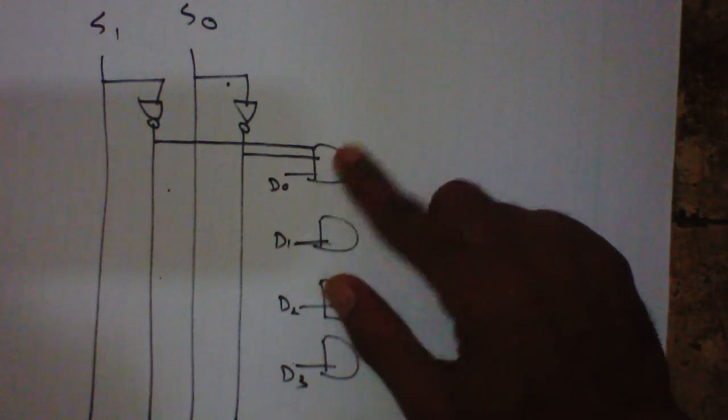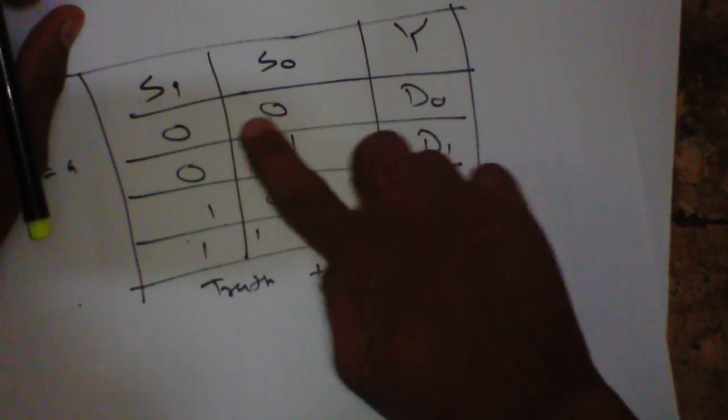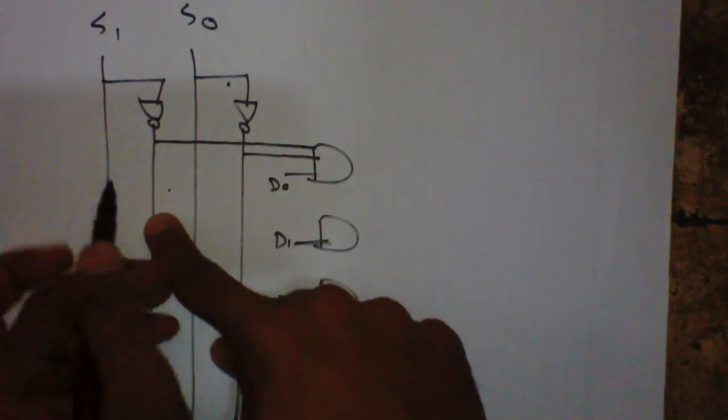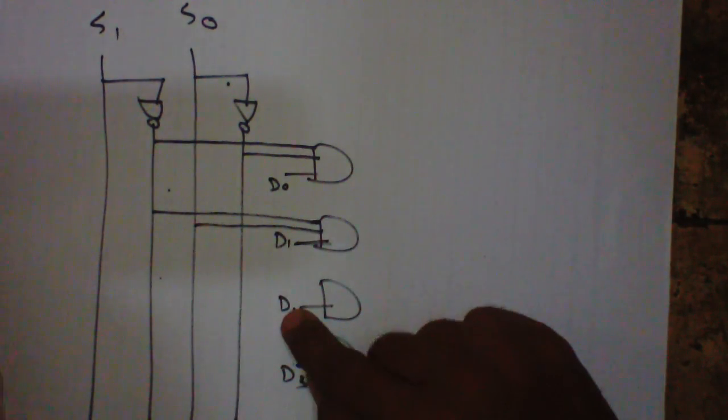Now, for D1, invert of S1 and directly S0. Invert of S1 means this, and directly S0 means this.